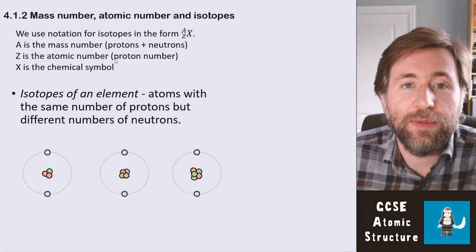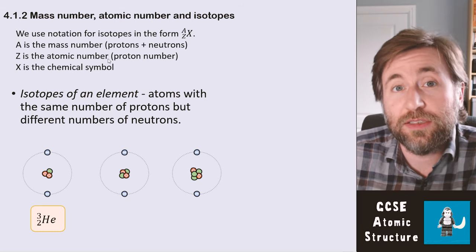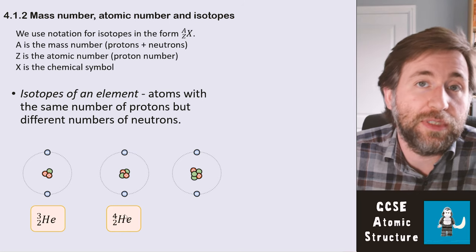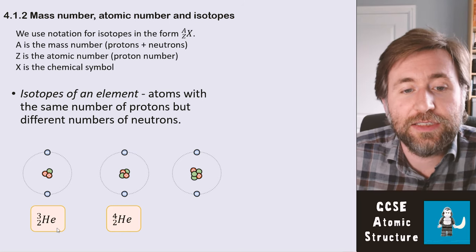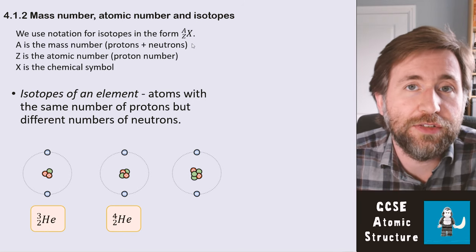A is the mass number. So the mass number of this first one is three. Z is the atomic number, which is the proton number. That's two, and you'll see that's two for all of these because they're all helium. X is the chemical symbol. So He is the chemical symbol and it takes the place of X in this notation.